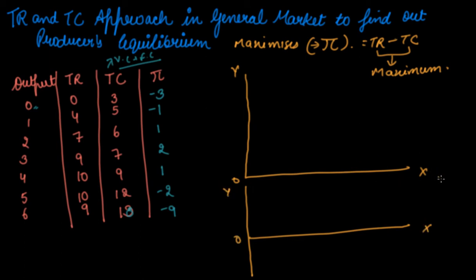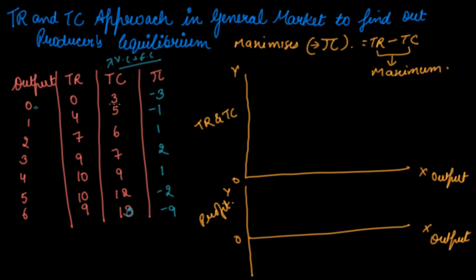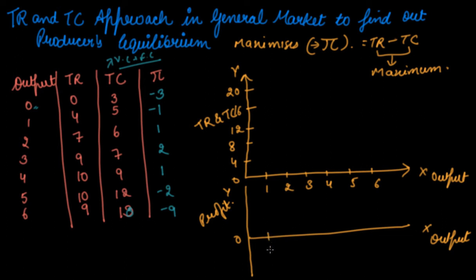In the first graph we will take output on the x-axis and TR and TC on the y-axis. In the second parallel graph, we will track profit. We will draw on a scale — let's take a scale of 4, going 4, 8, 12, 16, and 20. Quantities go from 1, 2, 3, 4, 5, and 6. Make the parallel graphs, otherwise you won't get the accurate and right answer.